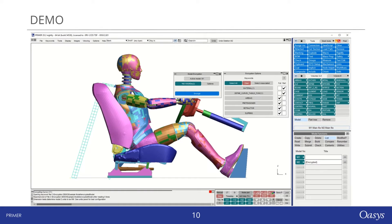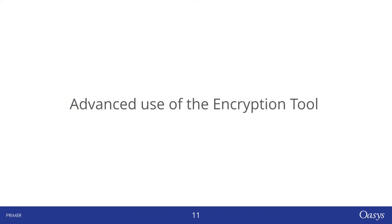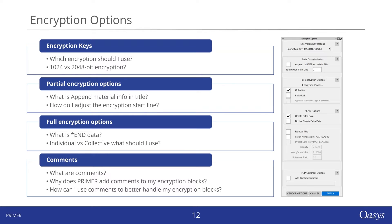Let's talk about some advanced uses of the encryption tool. In this section, we will break down the different encryption keys available to you and help you understand which level of encryption strength to use. Additionally, we will cover the range of options for both partial and full encryption, and I will guide you on how to effectively use comments to manage your encryption blocks with ease.